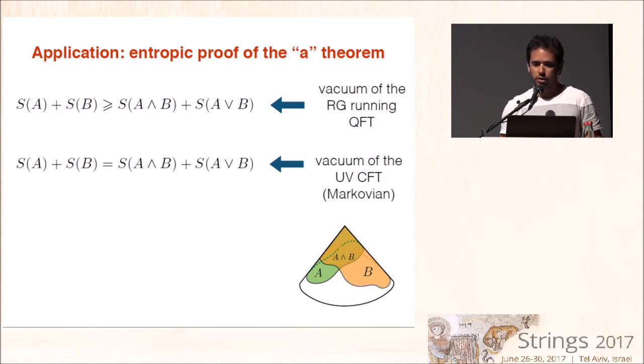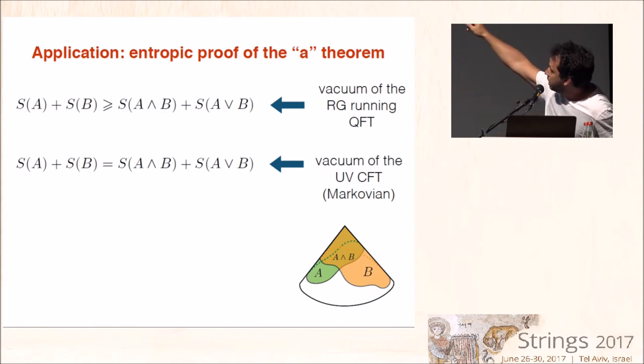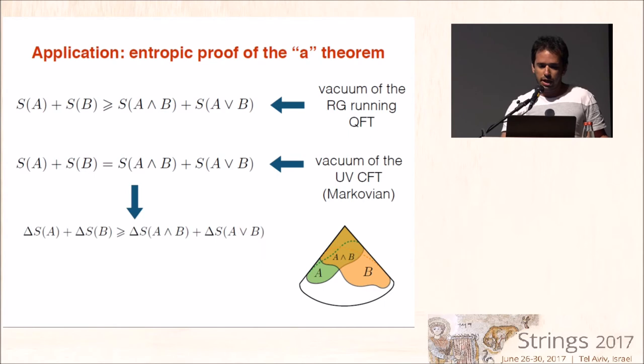And the way we have to do that is just take the full strong subadditivity inequality for the vacuum of the RG running quantum field theory, and the saturation of it for the vacuum of the ultraviolet CFT, which is Markovian. And adding it, you have an improvement inequality between the difference of entanglement entropies.